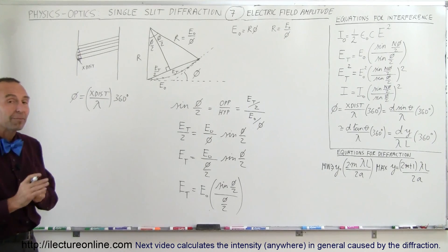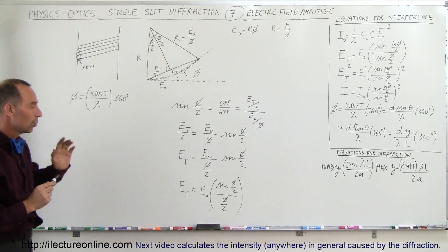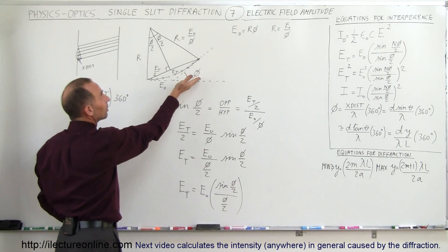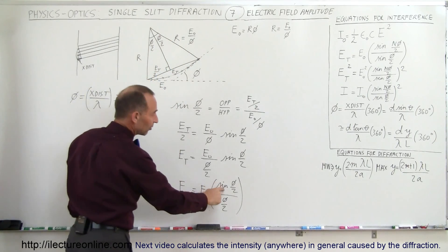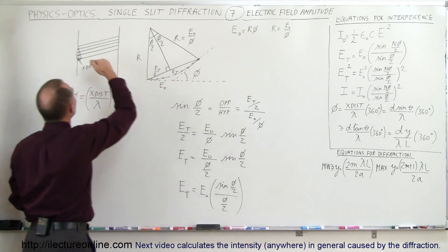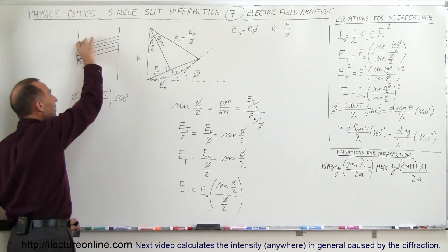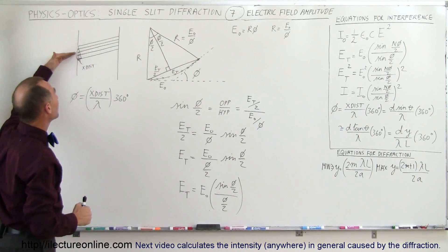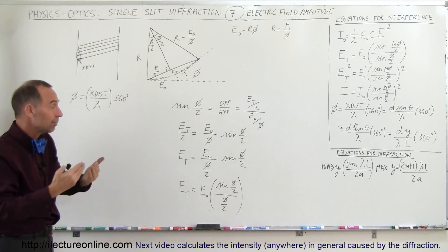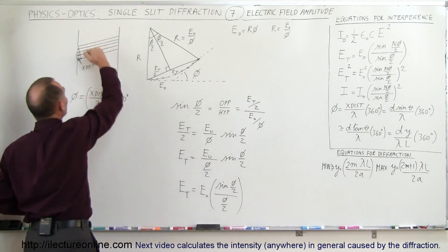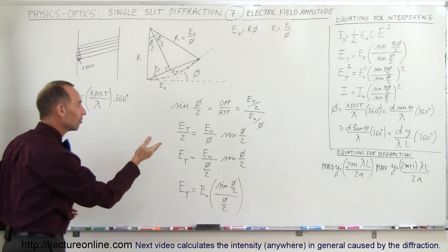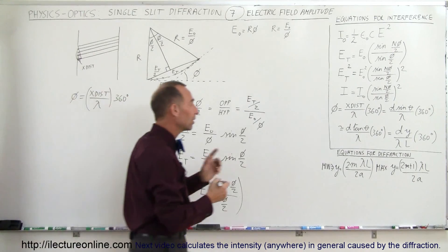This is one of the major equations for the diffraction of a single beam. It gives us the total electric field strength as a function of the phase angle. If the phase angle becomes 360 degrees, the sine of 360/2 is sine of 180 degrees, which equals 0. That means if the phase difference between the top and bottom of the beam is a full lambda, you get a minimum — zero electric field strength, which gives zero intensity.